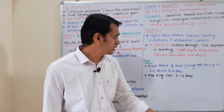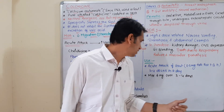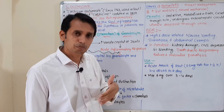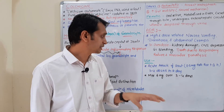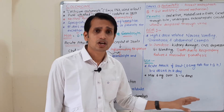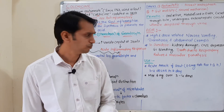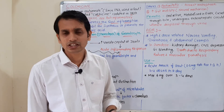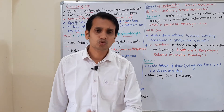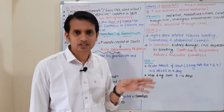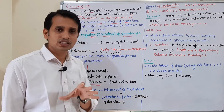Colchicine is mainly used in the acute gout treatment. The dose is approximately 0.5 mg every 1 to 3 hours, with a maximum of 3 to 4 doses per day. The maximum dose is approximately 6 mg over 3 to 4 days, which is the first schedule of treatment. After approximately 7 days, the next phase can be started.